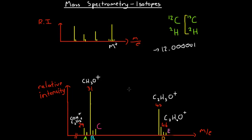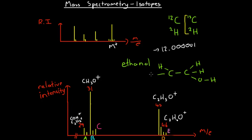Now we're going to look back at the example from our fragmentation video — ethanol. I've drawn the same spectrum as last time but with a little more detail. We're only looking at the top end of the spectrum, above mass-on-charge ratios of 29. I've labeled all the peaks with the chemical formulae of their fragments: CH₃O⁺, and the peak at m/z 29 was either caused by COH⁺ or C₂H₅⁺, and so on with peaks at m/z 45 and 46.